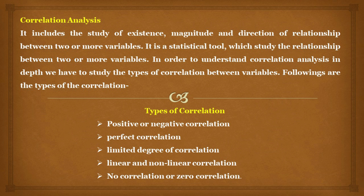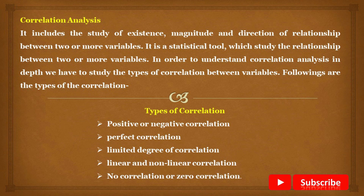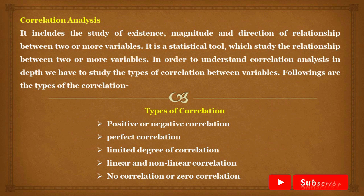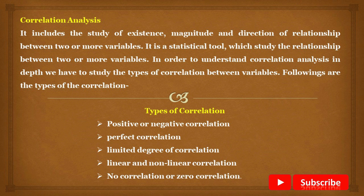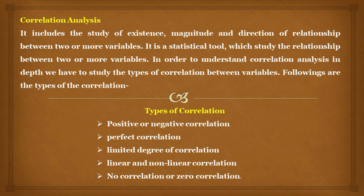In order to understand correlation analysis in depth, we have to study the types of correlation between variables. The types are: first, positive or negative correlation; second, perfect correlation; third, limited degree of correlation; fourth, linear and non-linear correlation; and lastly, if there is no interdependence between two variables, then it is defined as no correlation or zero correlation.